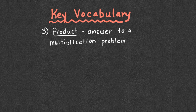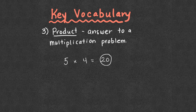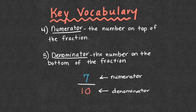When we hear the word product, that's the answer to a multiplication problem. For example, five times four is equal to 20 — in this case, 20 would be our product. We also have numerator, which is the number on top of the fraction, and denominator, the number on the bottom. In seven-tenths, seven is the numerator and ten is the denominator.